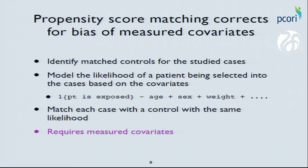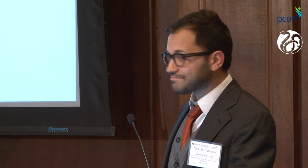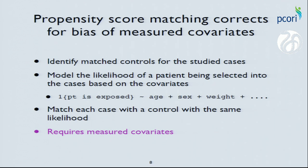Propensity score matching is a technique used in observational data analysis to correct for exactly these types of effects. You identify a matched set of controls for your studied exposed cases by modeling the likelihood that a patient will be exposed to a drug — using logistic regression on everything you know about your patients — then matching unexposed patients to exposed patients based on those probabilities. This produces effect estimates very close to randomized clinical trials. But it requires knowing and having measured all confounding covariates, which we typically don't have in large spontaneously collected observational data sets.